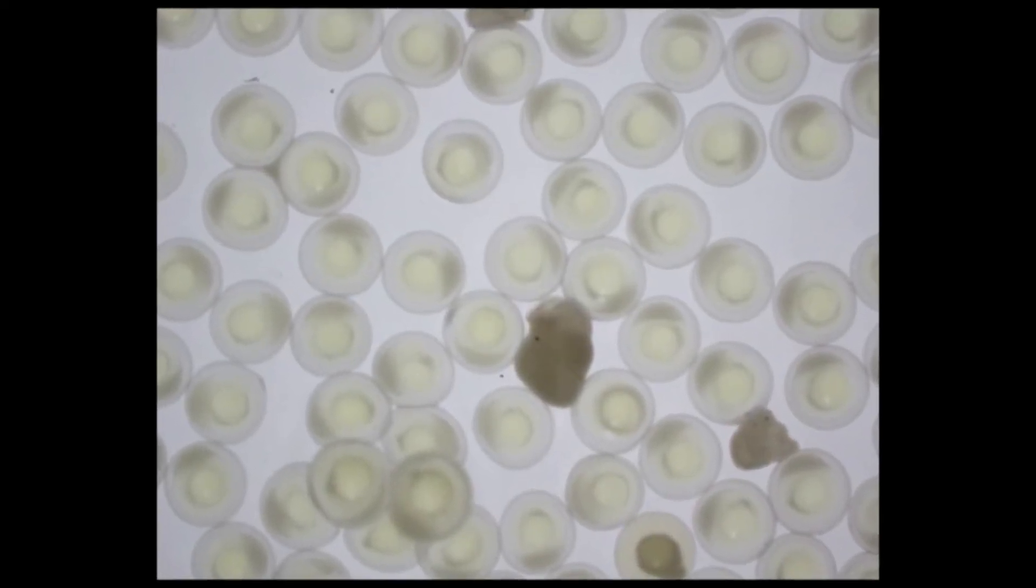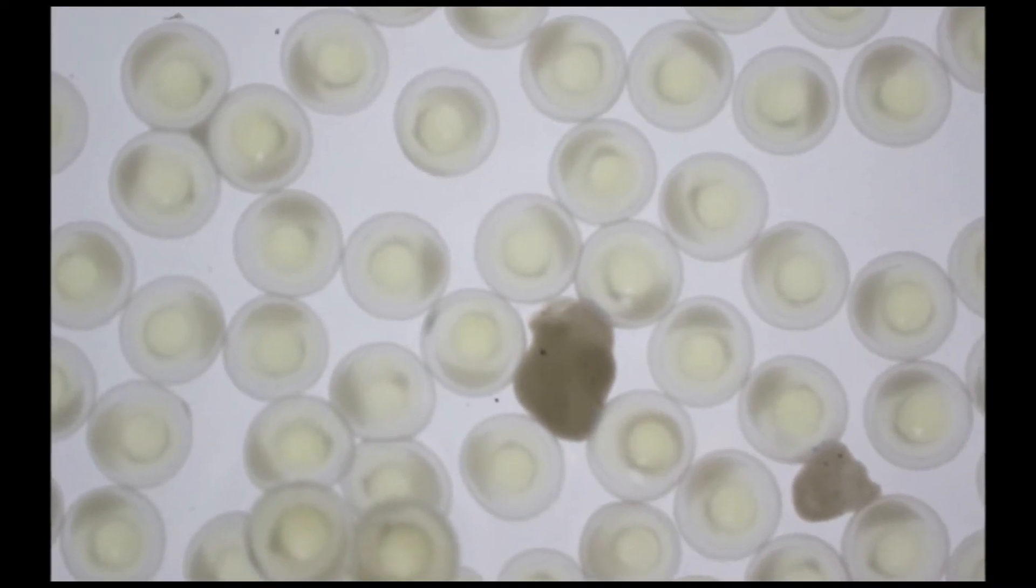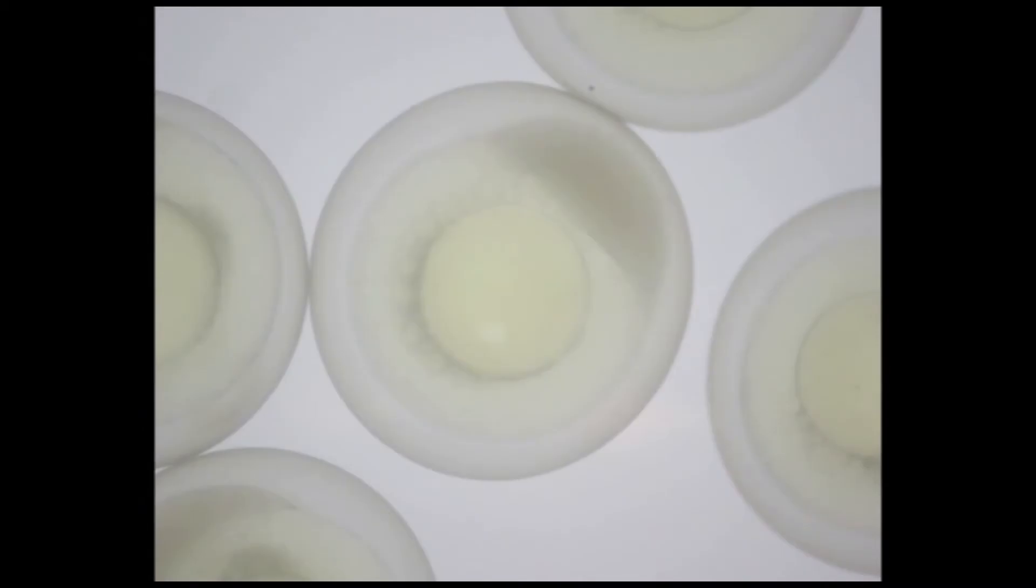Egg fertilization can be observed in as little as a few hours post-fertilization, but becomes very evident after 24 hours utilizing a microscope. In fertilized eggs, cell division begins to occur, creating what looks like a cap at one side of the egg.